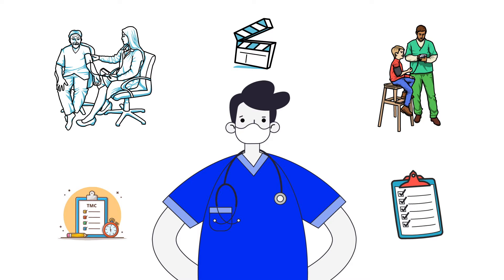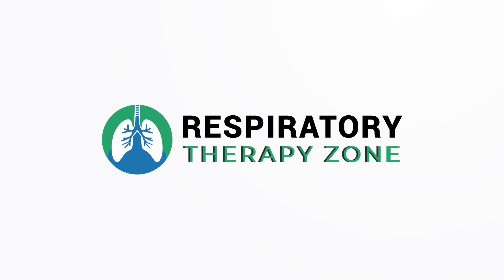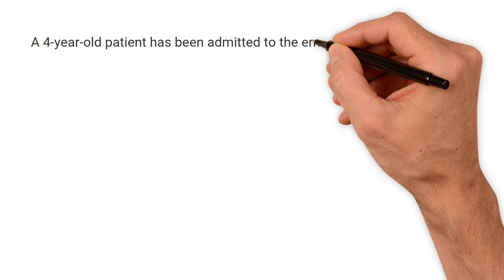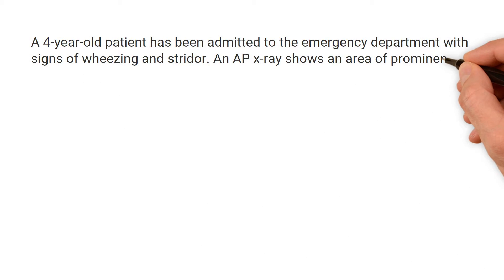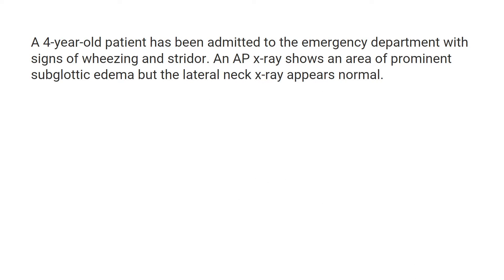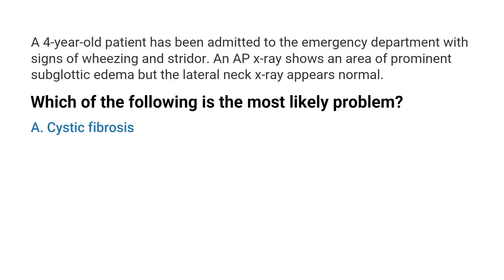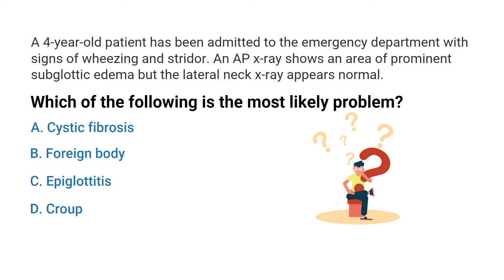To help, in this video we're going to break down a few sample TMC practice questions on this topic. A four-year-old patient has been admitted to the emergency department with signs of wheezing and stridor. An AP x-ray shows an area of prominent subglottic edema, but the lateral neck x-ray appears normal. Which of the following is the most likely problem: A) cystic fibrosis, B) foreign body, C) epiglottitis, or D) croup?